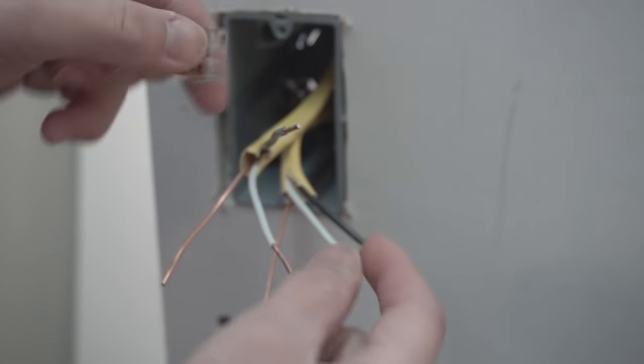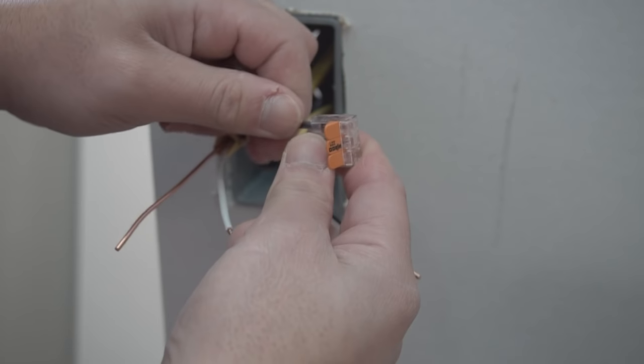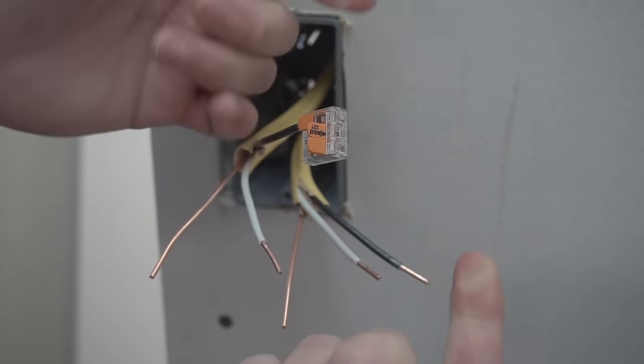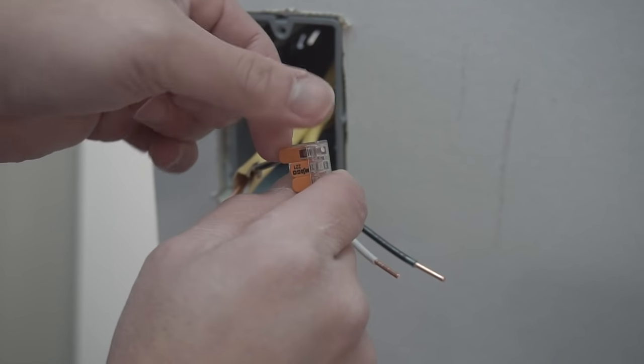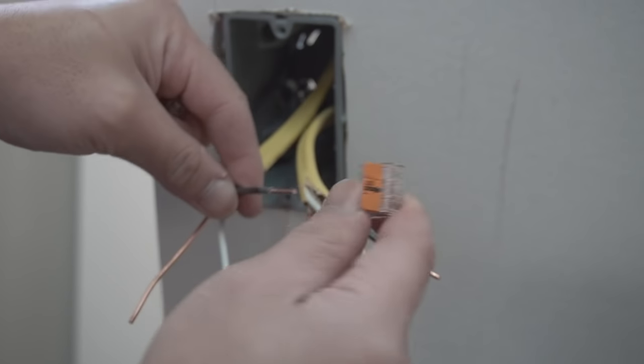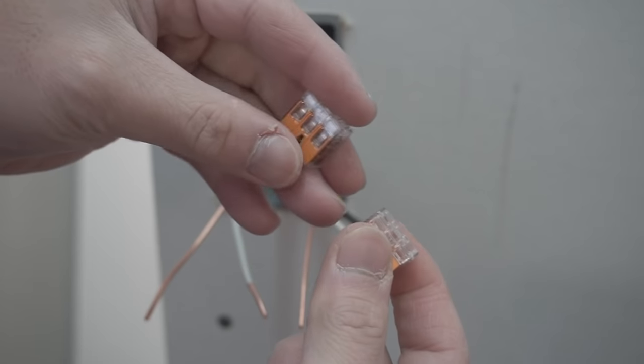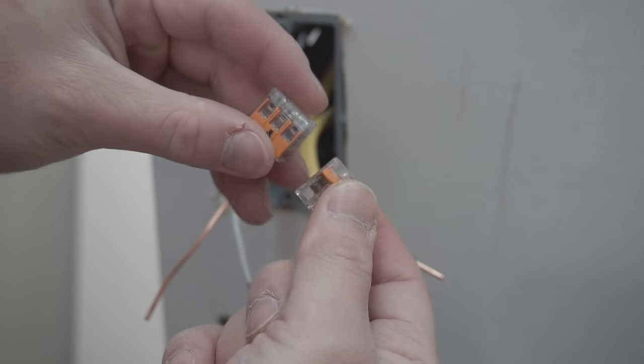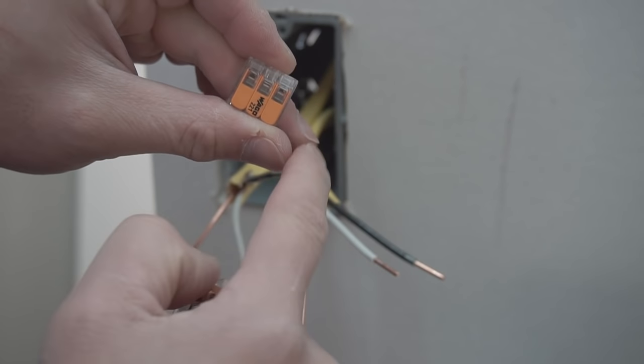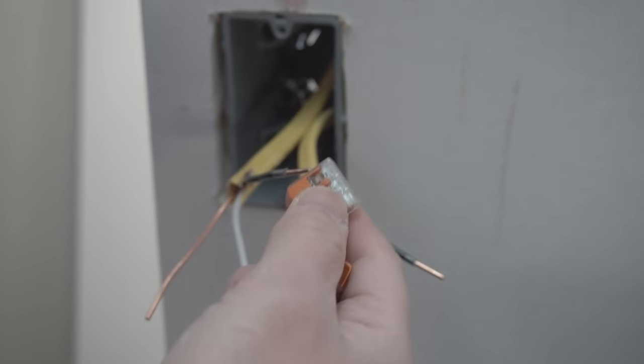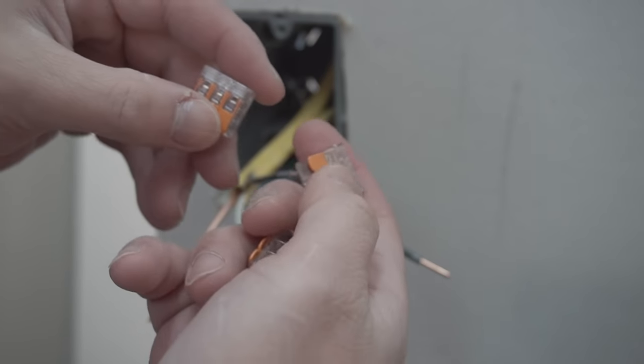These Wago wire connectors are the best. These are the only ones I use now because they're reusable and easy to use. You just insert it in one terminal, close the lever, and it's attached. When you're done, if you want to reuse it later, switch back the lever. There are different terminal sizes—two, three, four, five, six. These are revolutionary.